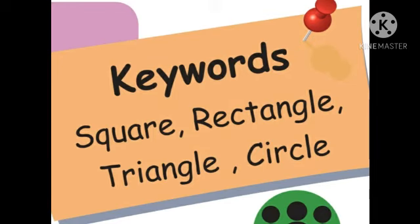You know the spellings also. Square — S, Q, U, A, R, E. Square. Rectangle — R, E, C, T, A, N, G, L, E. Rectangle. Triangle — T, R, I, A, N, G, L, E. Triangle. Circle — C, I, R, C, L, E. Circle.